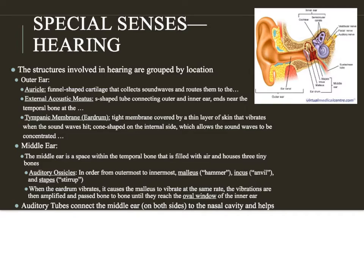They all kind of start at the outer ear. On this diagram, everything in this region is considered the outer ear. First we have the auricle, sometimes also called the pinna depending on the text or reference you're using. It acts as a funnel — it's a large cartilage structure with no bone in the outer part of the ear. It's shaped to funnel sound waves into the more narrow ear canal, entering through the external acoustic meatus, or EAM.